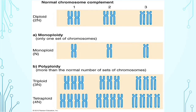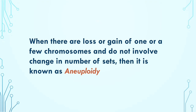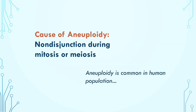When there is a loss or gain in the number of chromosomes and there is a change in the total number of chromosomes — without involving any change in the number of sets — that is known as aneuploidy. Aneuploidy is very common in the human population. The basic reason for aneuploidy is non-disjunction during mitosis and meiosis.